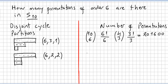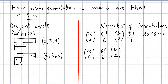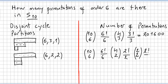For partition (6, 2, 2): start with combinations of 10 choose 6, times 6 factorial divided by 6 for the 6-cycle. Then from the remaining 4 elements, choose 2 for the first 2-cycle: combinations of 4 choose 2, times 2 factorial divided by 2. Then choose 2 from the remaining 2 elements, times 2 factorial divided by 2.